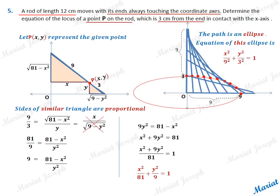Hence, the locus of the point given to us is an ellipse whose equation is x squared by 9 squared plus y squared by 3 squared equals 1.